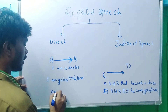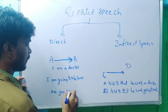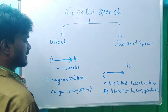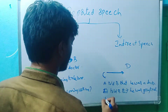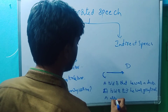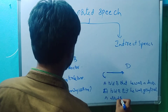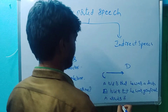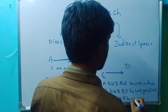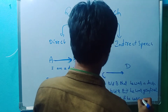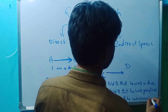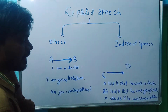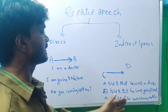A to B said: 'Are you coming with me?' This is an interrogative sentence. The indirect speech form is: A asked B if he was coming with him.